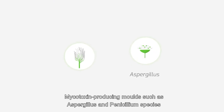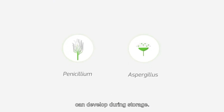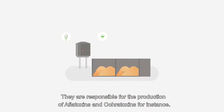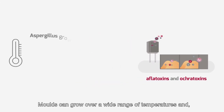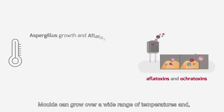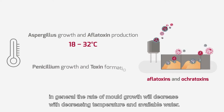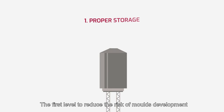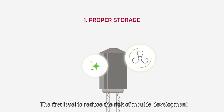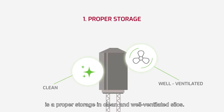Mycotoxin-producing moulds such as Aspergillus and Penicillium species can develop during storage. They are responsible for the production of aflatoxins and ochratoxins, for instance. Moulds can grow over a wide range of temperatures and, in general, the rate of mould growth will decrease with decreasing temperature and available water. The first level to reduce the risk of mould development is proper storage in clean and well-ventilated silos.